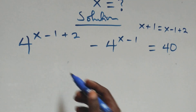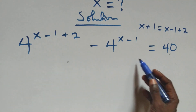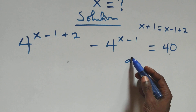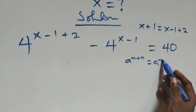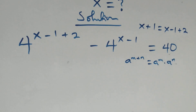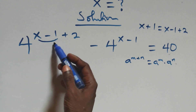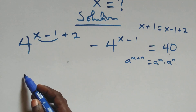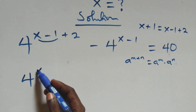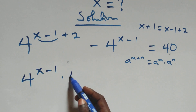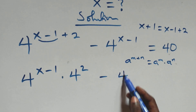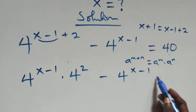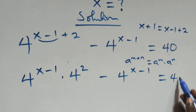The next step: we apply the law of indices. When we have a raised to the power n plus m, this equals a raised to the power n times a raised to the power m. Treating x minus one as one part and 2 as the other, we get 4 raised to the power x minus one times 4 squared, minus 4 raised to the power x minus one, equals 40.